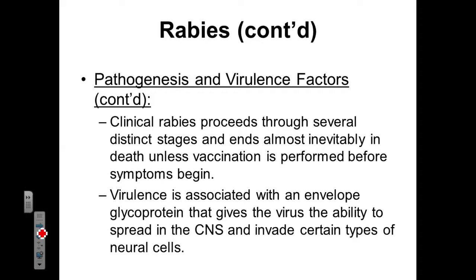Clinical rabies is going to go through several distinct stages. It ends almost always with death unless the patient is immediately vaccinated after being bitten. It's very important that if a patient is bitten by a wild animal that could potentially have rabies, the patient receives the rabies vaccine before symptoms start to manifest themselves — always err on the side of caution. The rabies vaccine is a lot cheaper than funeral expenses. The virulence associated with the rabies virus is generally speaking fairly high. This virus has an enveloped glycoprotein that helps it move throughout the CNS and invade neural cells — it's capable of penetrating the blood-brain barrier because of those special glycoproteins within its viral envelope.